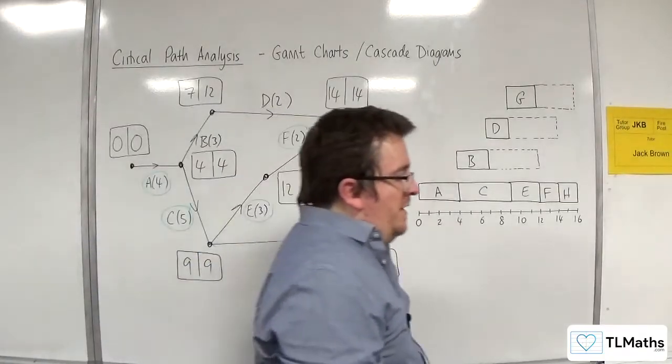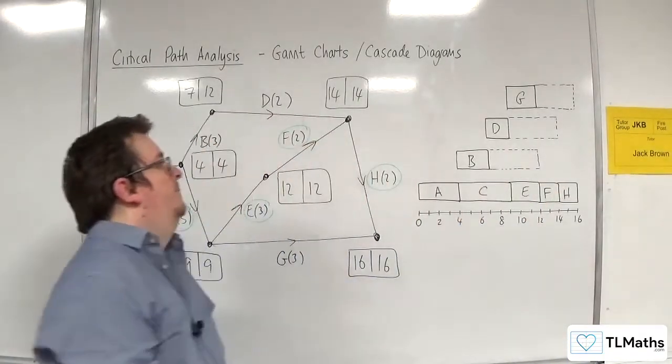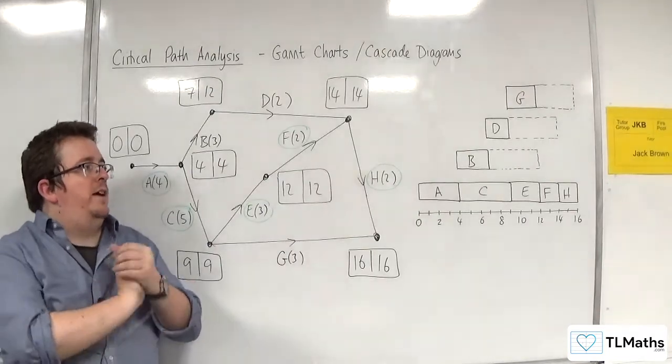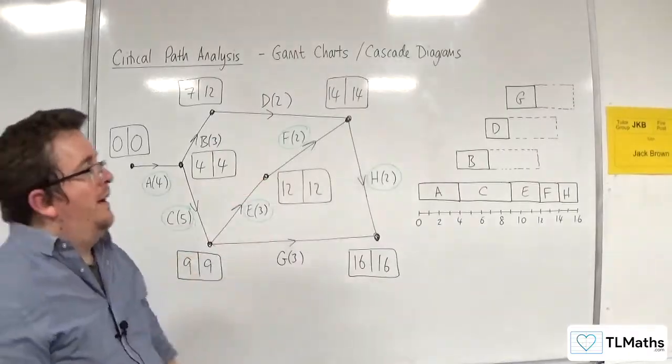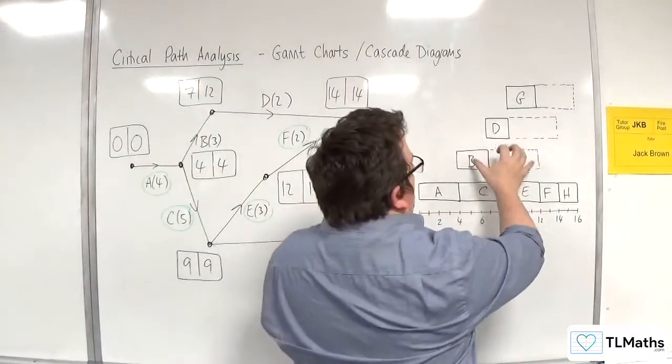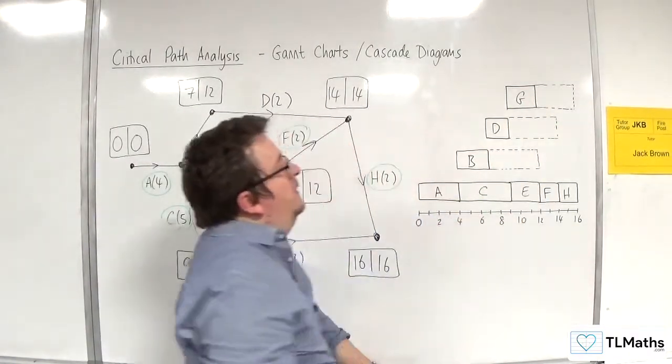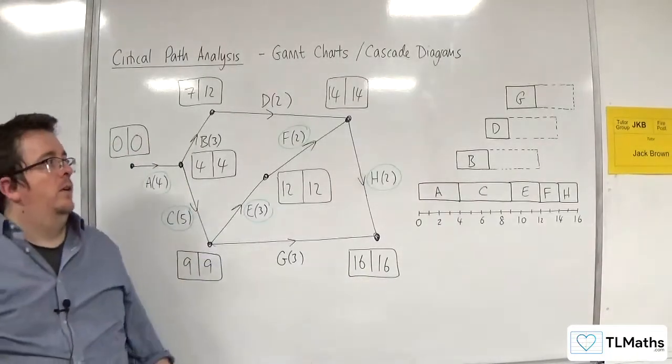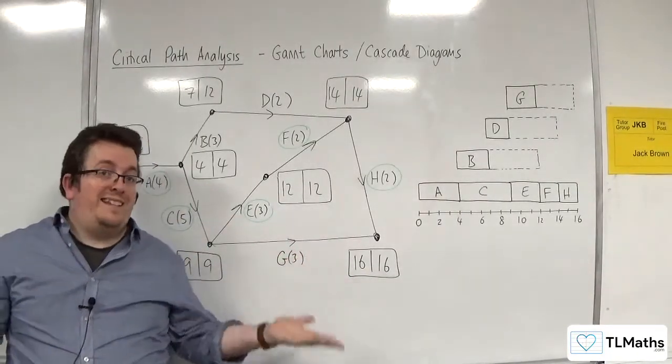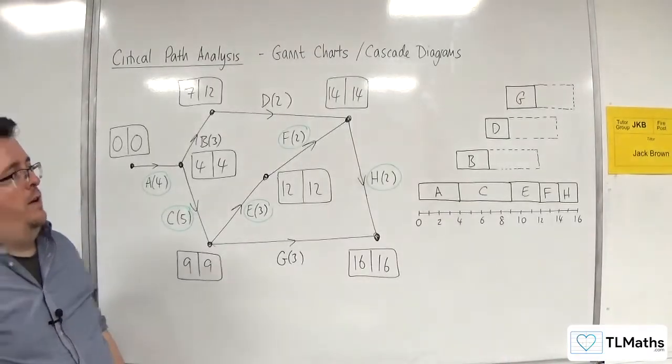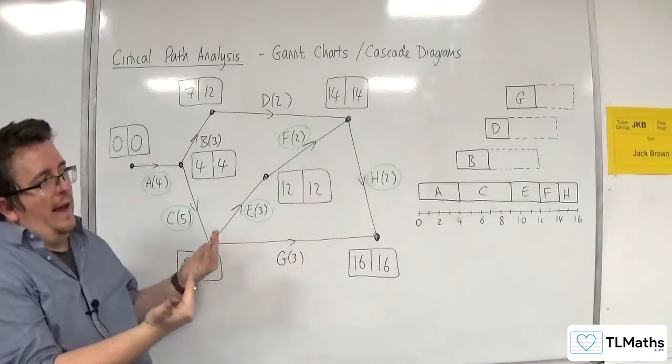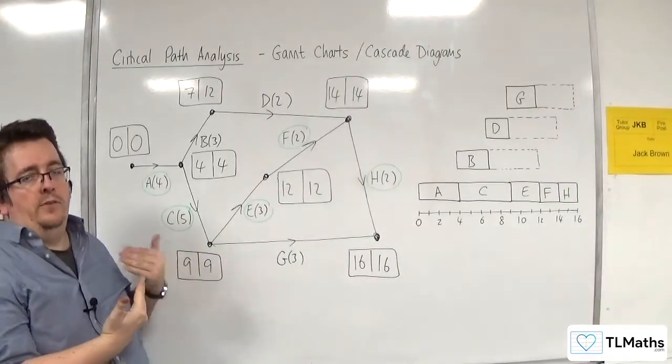And so that is your Gantt chart. What it does is all of your critical paths at the bottom, and then all the other non-critical activities one on top of the other, preferably in the order that they appear, but not necessarily.